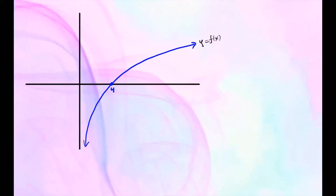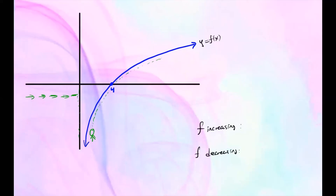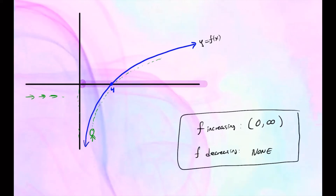Here's our last example. We want to know if this is the graph of some function f of x, where is this function increasing and decreasing. Observing from left to right, there's no graph until we get to the y-axis. If you stand right here, you start to go up and continuously keep going up — there's no change in behavior. So we can say the function is increasing from 0, open, to infinity. For decreasing, there is no interval — this function happens to be increasing all the time.